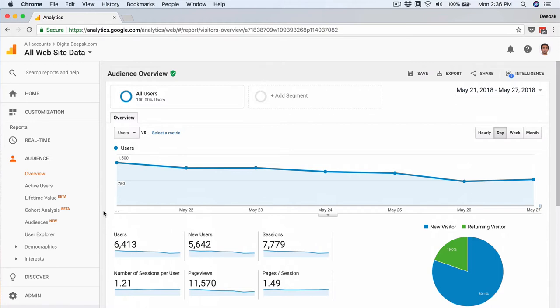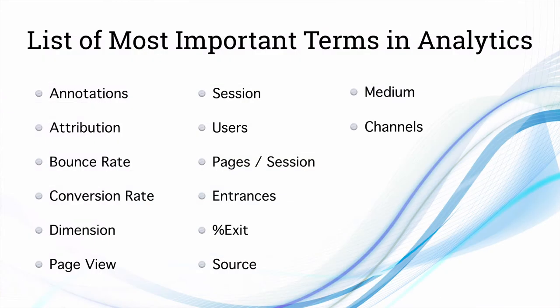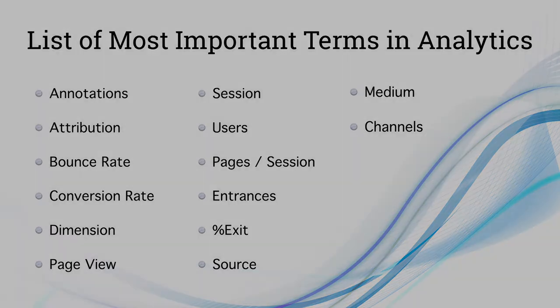I have done my own research and come up with 14 different terms — these are the most important terms frequently used in analytics. If you look for metrics and terms in analytics, sometimes people have a long list of 50 to 100 terms, but you need not go to that level of depth right now. Let's have an in-depth look at each of these terms.